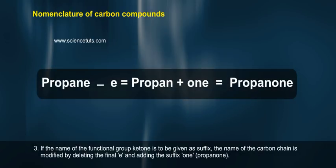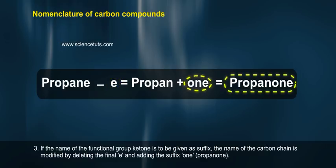Rule 3: If the name of the functional group ketone is to be given as suffix, the name of the carbon chain is modified by deleting the final e and adding the suffix o-n-e, propanone.